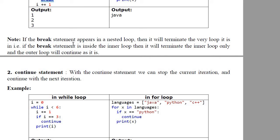When we reach the break statement — say at value 3 — the break statement inside the loop will terminate that inner loop. Only the outer loop will continue as it is.